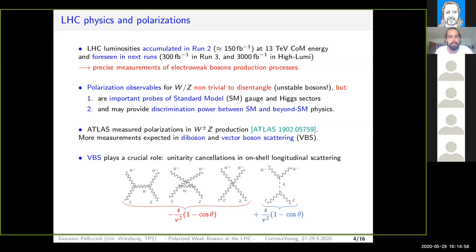These observables could be and are important probes for the Standard Model itself, and in particular for the gauge and Higgs sector of the Standard Model, but they could in principle also provide some discrimination power between the Standard Model and new physics effects — beyond Standard Model theories. ATLAS recently measured the polarization of W and Z bosons in boson pair production last year, and more measurements are expected both in boson pair production and in vector boson scattering.